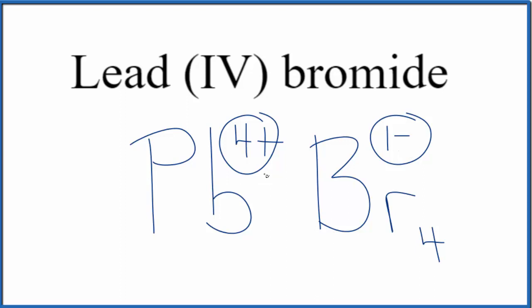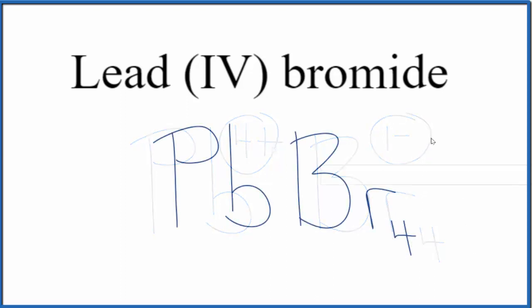That would balance out the 4+. So this is the formula for lead (IV) bromide, PbBr4.